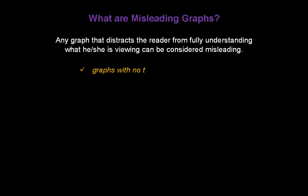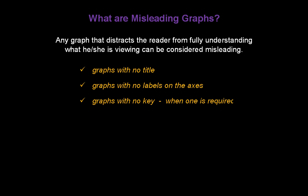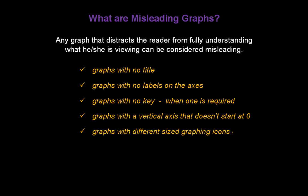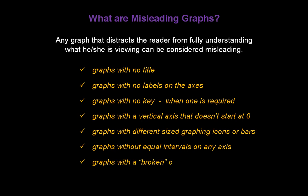Here are some examples: graphs with no title; graphs with no labels on the axes; graphs with no key when a key is required; graphs with a vertical axis that doesn't start at zero; graphs with different sized graphing icons or bars; graphs without equal intervals on any axis; and graphs with a broken or squished axis. Now let's take a look at some examples of these misleading graphs.